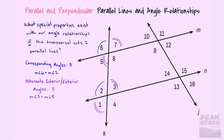We also know that alternate interior and alternate exterior angles are congruent. An example of alternate interior angles would be angles three and five, and for our exteriors we'd be looking at something like angles one and seven.